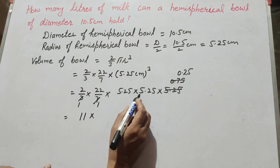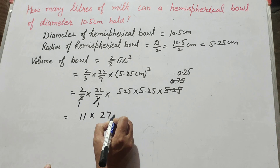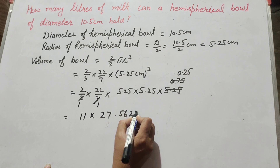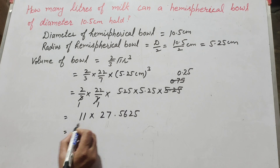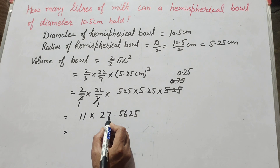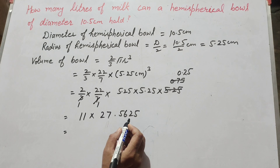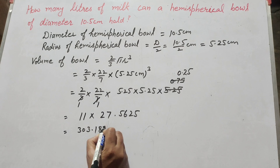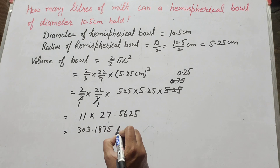Then 11 multiplied by 5.25 multiplied by 5.25 gives 27.5625. Finally, 11 multiplied by 27.5625 gives 303.1875 centimeter cube. So the volume of the bowl is 303.1875 cm³.